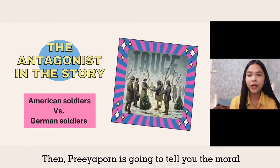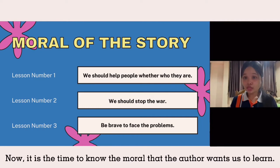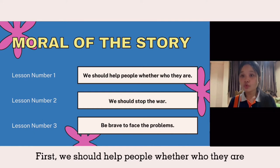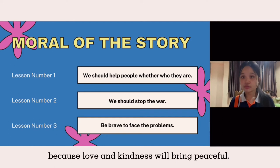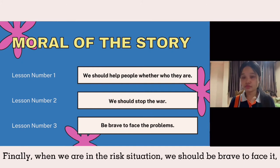Then Priya Pond is going to tell you the moral and the point of view of this story. Now it is the time to know the moral that the author wants us to learn. First, we should help people regardless of who they are because love and kindness will bring people together. Second, we should stop the war because many people die because of war. Finally, when we are in a difficult situation, we should be brave and not be afraid.